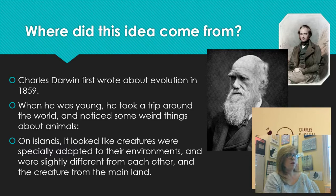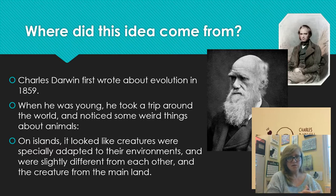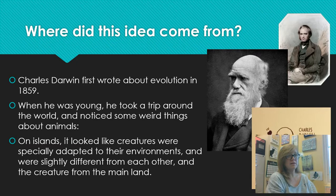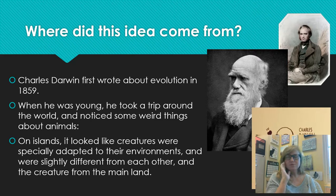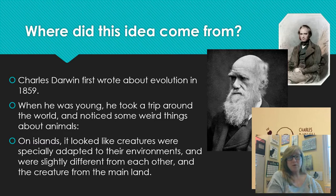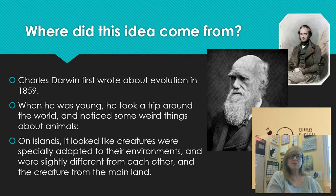He was also struck by how there are creatures on opposite sides of the world that looked really similar but weren't the same or closely related — like the flying squirrel and the sugar glider. He was on a ship called the Beagle, and one of the places he visited were the Galapagos Islands. When you see the Galapagos Islands on a test, they're talking about natural selection, evolution, Darwin — a life pro tip. Some of the things he looked at there were finches, little birds, and also turtles.